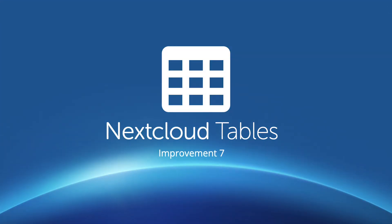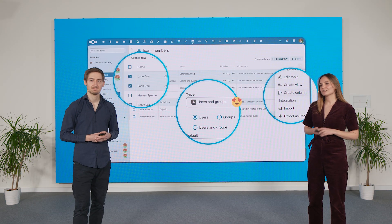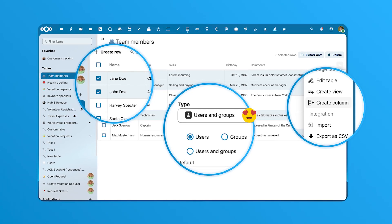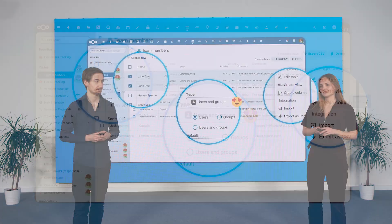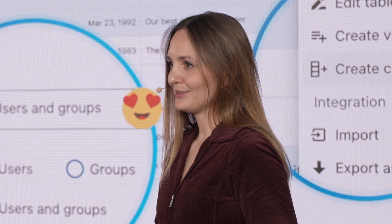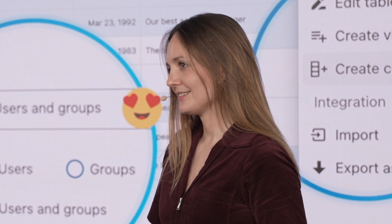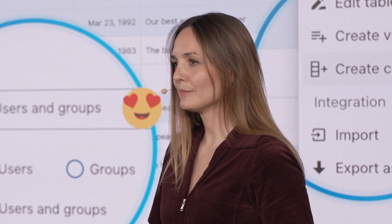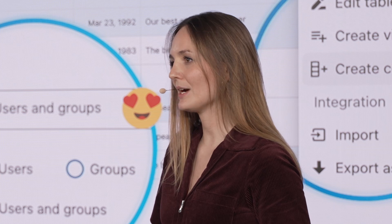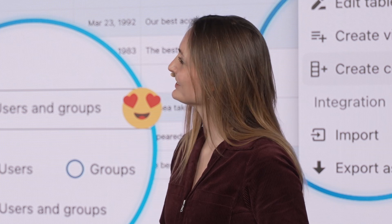We do have a lot more updates to share. Let's talk about Nextcloud Tables next. Nextcloud Tables lets you track all kinds of information, and what's really useful is that you can link this data directly to other Nextcloud resources like talk rooms or deck cards, keeping everything connected in one place. For example, you can create a database to manage your book reading list, simply by using Nextcloud Tables without needing to write code.